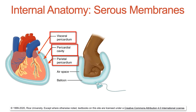Between the visceral and parietal layers there is a space containing serous fluid. This fluid provides cushioning and reduces friction resulting from movement — in the case of the pericardial cavity, the beating of the heart — and the serous fluid cuts down on the friction from that movement.